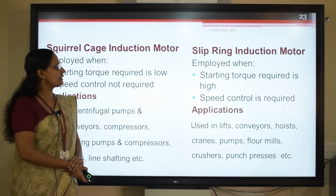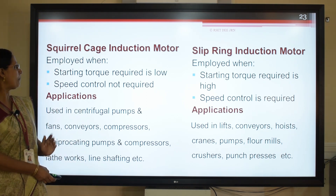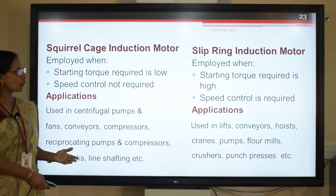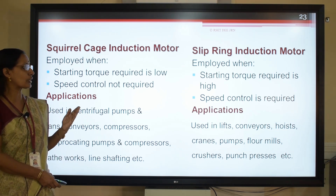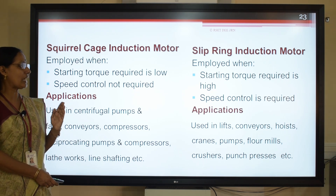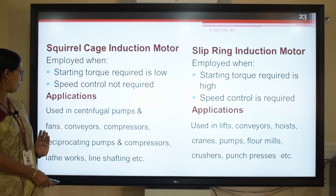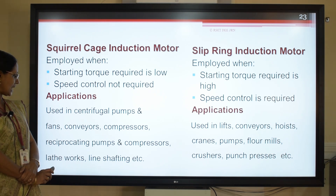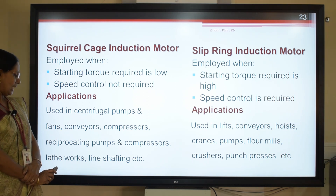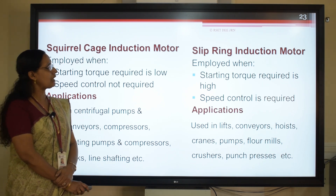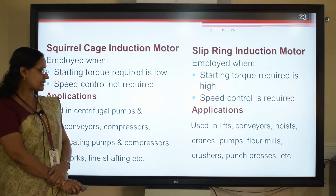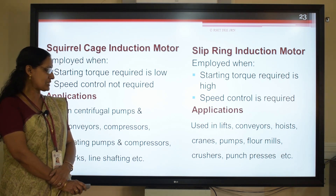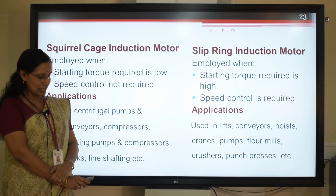Squirrel cage induction motors are employed when starting torque required is low and speed control is not required. Slip ring induction motors are employed when starting torque required is high and speed control is required. Applications of squirrel cage induction motor include centrifugal pumps, fans, conveyors, compressors, reciprocating pumps, lathe works, and line shafting. Slip ring induction motors are extensively used in lifts, conveyors, hoists, cranes, pumps, flour mills, crushers, printing presses, and punch presses.